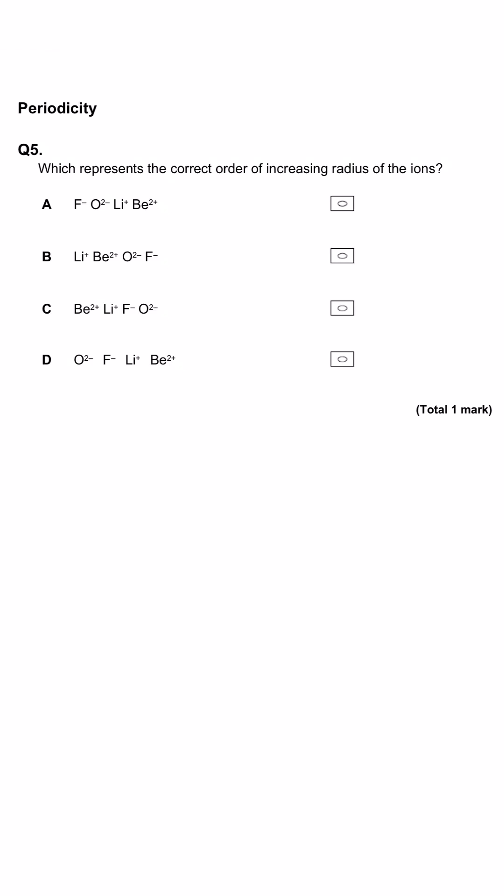Which of these is the correct order for the increasing radius of the ions? Each row has the same four ions.